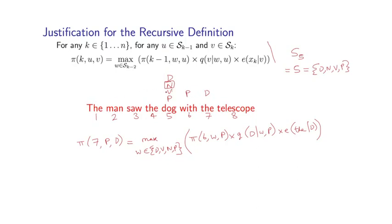The highest probability path going through tags n, p, d at positions 5, 6, and 7 has to have probability pi(6,n,p) times q of d given n,p times e of the given d. So that's the highest score for any tag sequence ending in n, p, d at positions 5, 6, 7. Why is that?